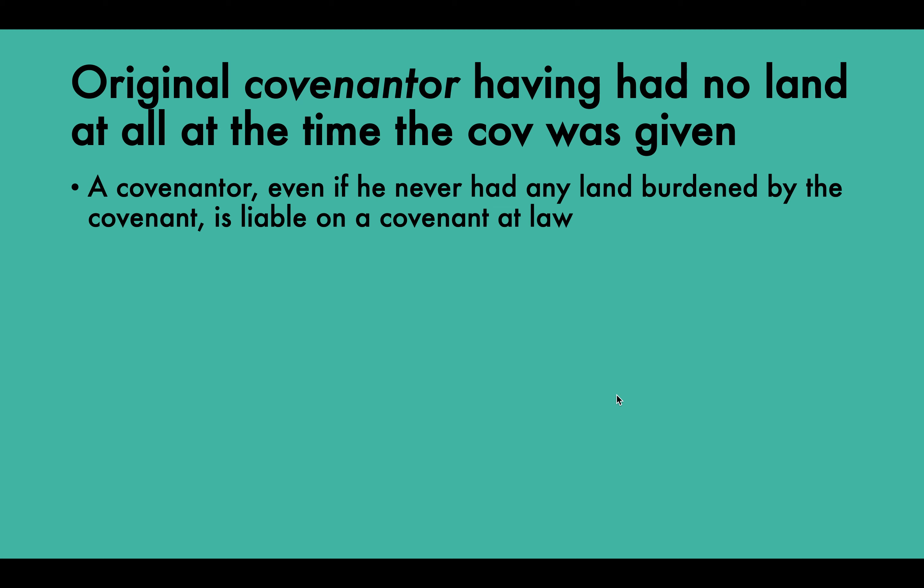The next situation is where the original covenantor had no land at all at the time the covenant was given. A covenantor, even if he never had any land burdened by the covenant, is liable on a covenant at law but not in equity. This is because the contractual nature of the obligation is not dependent on the original covenantor holding any estate in land. Therefore, in Smith and Snipes Hall Farm from 1949, the defendant covenantor was liable for a positive covenant to repair and maintain riverbanks even though he had no land himself, due to the contractual nature of the promise. A covenant is, after all, a personal contractual promise, breach of which entails liability at law.